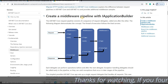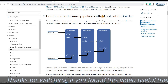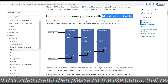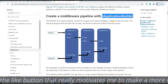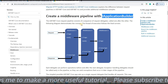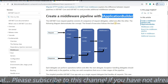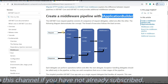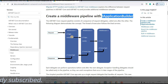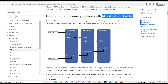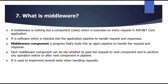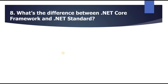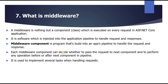The ASP.NET Core request pipeline consists of a sequence of request delegates called one after another. For example, a request passes through Middleware 1, then Middleware 2, then Middleware 3, each with a 'next' method to pass control forward. The pipeline then provides a response to the user. This is a very big topic and may be covered in a separate video.